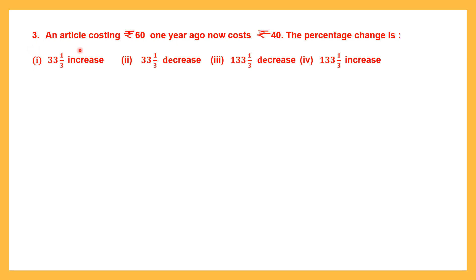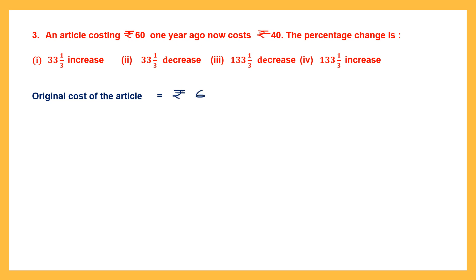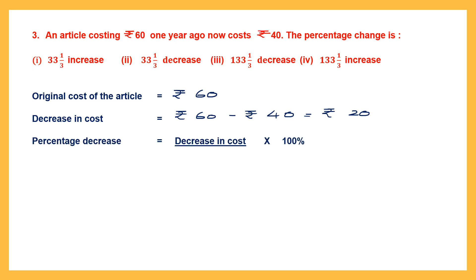Question 3. An article costing 60 rupees one year ago now costs 40 rupees. That means initially it was 60 and now it has come down, so there is a cost decrease. We need to find the percentage change. The original cost is 60 rupees. The price has come down to 40, so the decrease in cost is 60 minus 40, which equals 20 rupees.